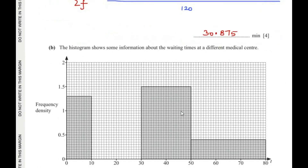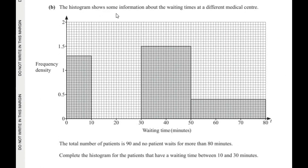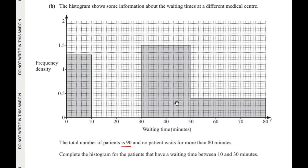Moving on to the next part: a histogram shows information about waiting times at a different medical center. The total number of patients is 90, and no patient waits more than 80 minutes. We need to complete the histogram for patients with a waiting time between 10 and 30 minutes — there is a bar missing for that interval.